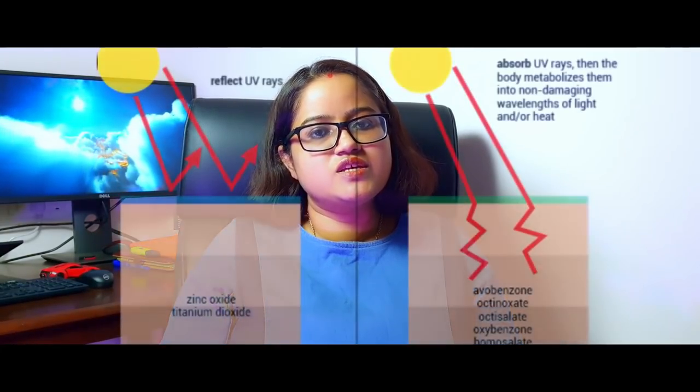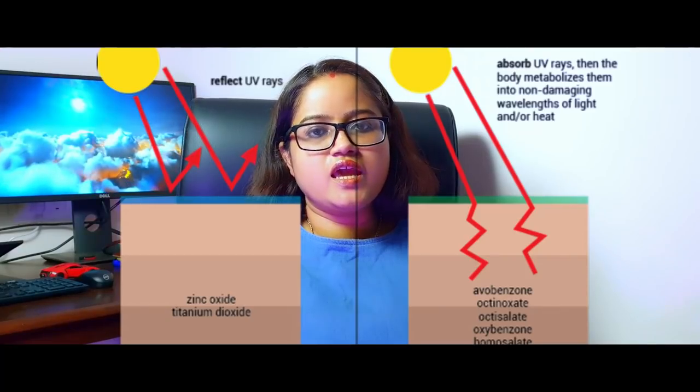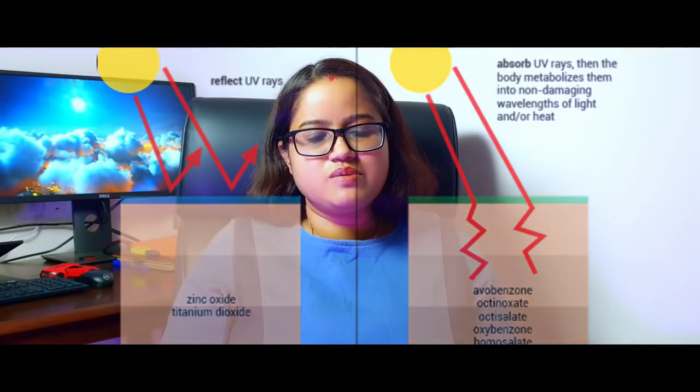If the chemical sunscreens are not effective against UVB rays, then UVA and UVB rays are not adequately blocked by them. UVB rays are not protected by UVA-only formulas.